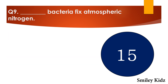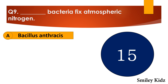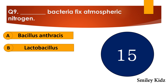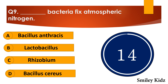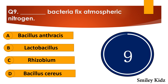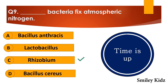Question number nine: Dash bacteria fixes atmospheric nitrogen. The options are: A. Bacillus anthracis, B. Lactobacillus, C. Rhizobium, or D. Bacillus cereus. Your time starts now. Your time is up and the right answer is option C — Rhizobium. Rhizobium bacteria fixes atmospheric nitrogen.